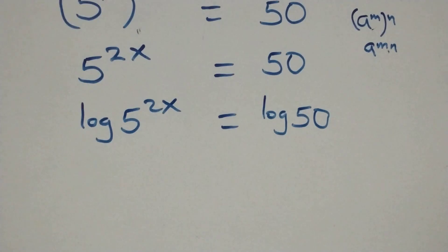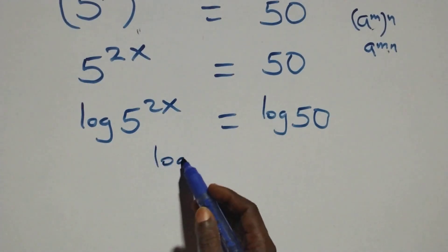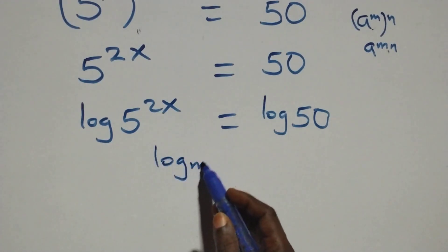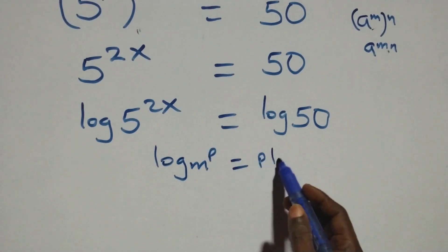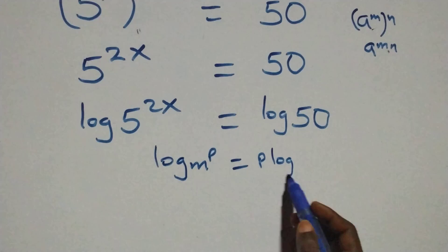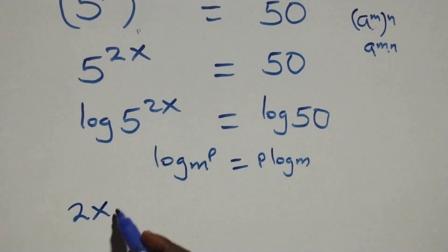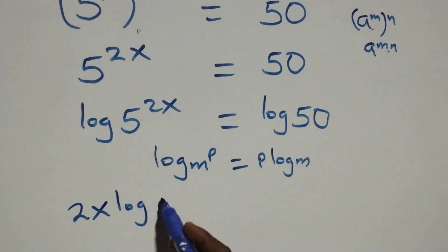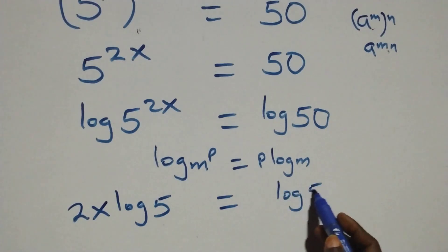Here we apply the power rule of logarithm: when we have log of m raised to power p, this is the same as p times log m. So this becomes 2x log 5 equals log 50 on this side.